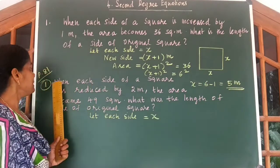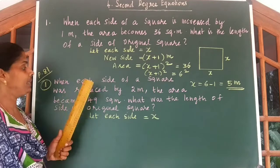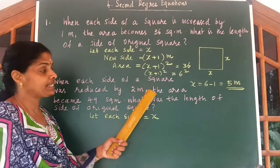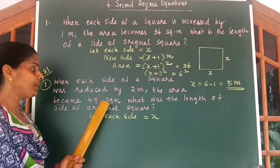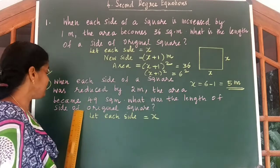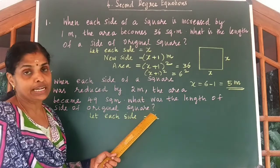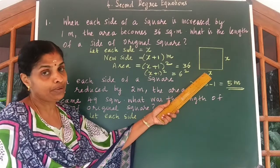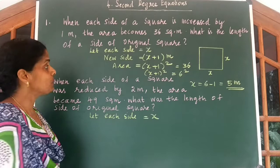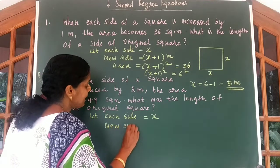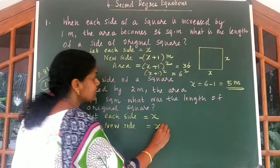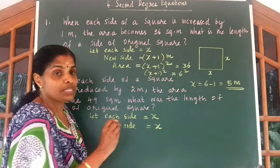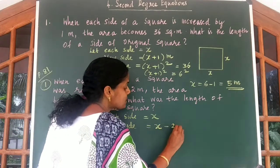Look at the first question on page number 81. When each side of a square was reduced by 2 meters, the area became 49 square meters. What was the length of the side of the original square? Here again, we take each side of the square to be equal to X. The new side is reduced by 2 meters, so the new side is equal to X minus 2.